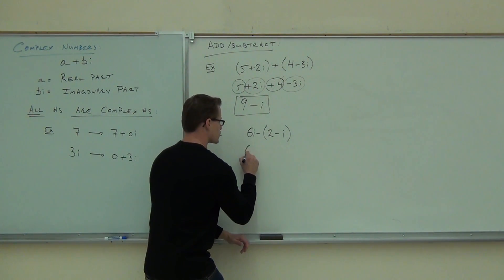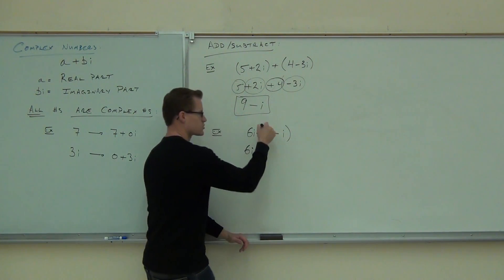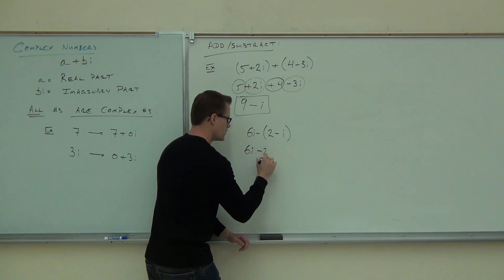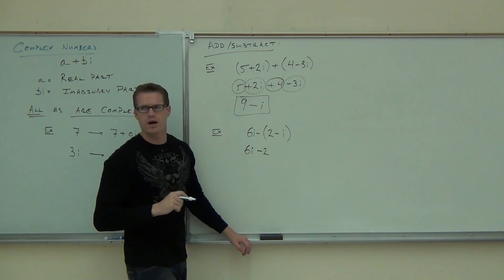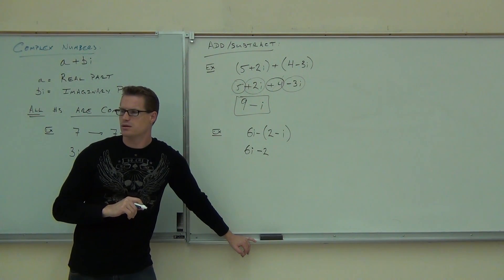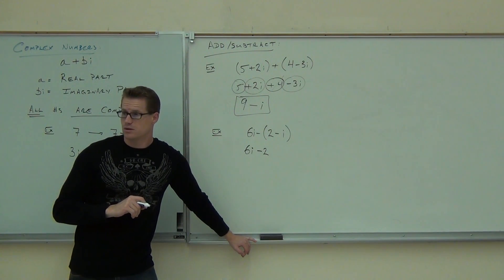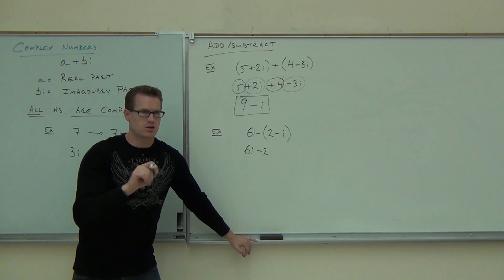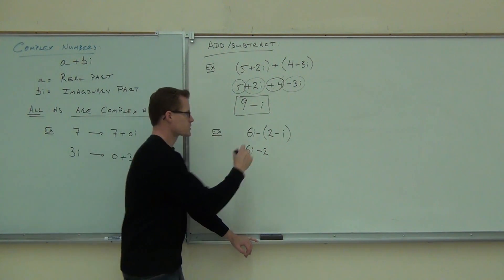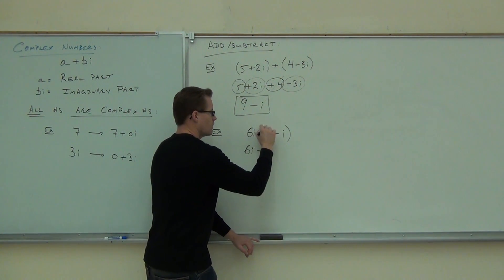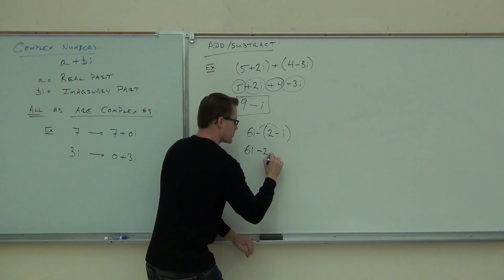You get the 6i, sure. But what are you going to get when I distribute my negative? Negative 2 plus i — wait, why plus i? Negative times negative is positive. If you forget to distribute that, are you going to get the right answer? No. So that's going to be a plus i.